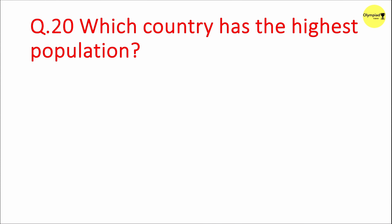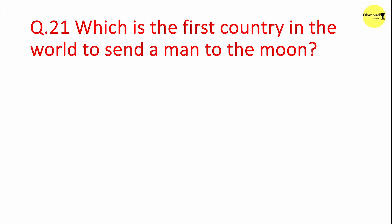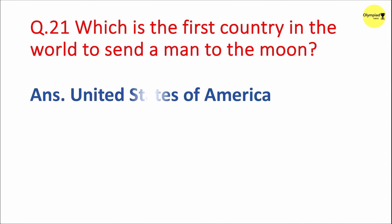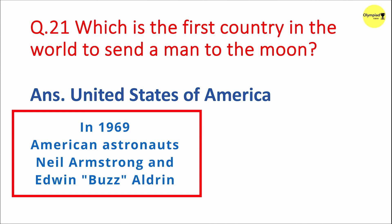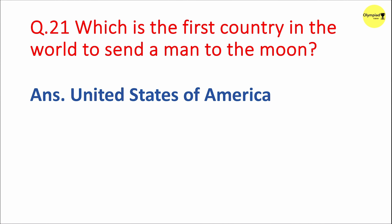Question 20: Which country has the highest population? Answer: China. Question 21: Which was the first country in the world to send a man to the moon? Answer: United States of America. In 1969, American astronauts Neil Armstrong and Edwin 'Buzz' Aldrin became the first humans to set foot on the lunar surface.